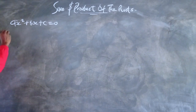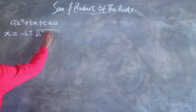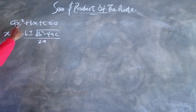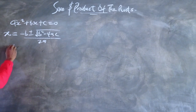If we solve this by completing the square, we obtain x = (-b ± √(b² - 4ac)) / 2a. This is known as the quadratic formula. From this, we can obtain the two roots of the quadratic equation. So let the roots of the quadratic equation be alpha and beta.